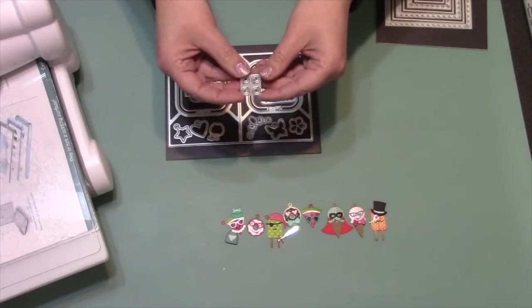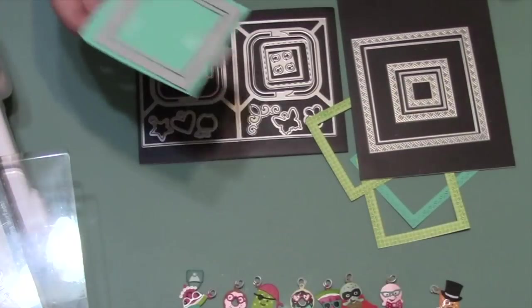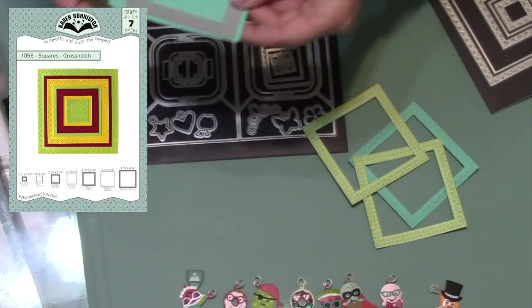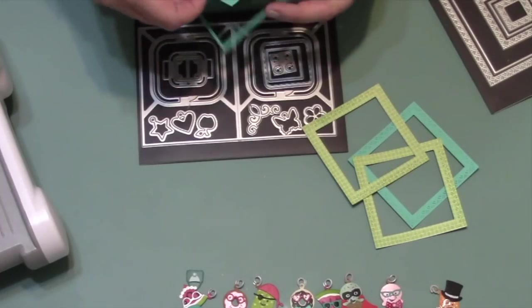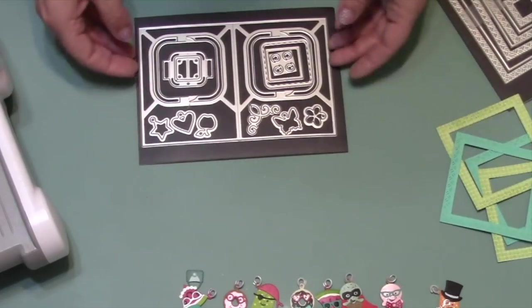It will cut four paper jump rings, and those look particularly realistic when you cut them out of a metallic cardstock. So the first thing I'm going to do is switch to our Squares Crosshatch die set, and I'm nesting together dies number 3 and 4 to make some nice crosshatch frames.